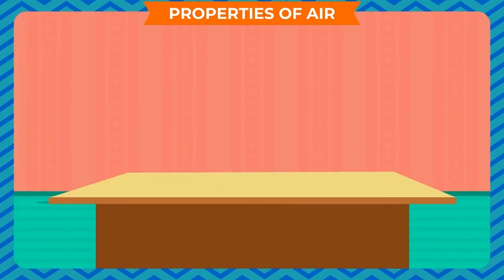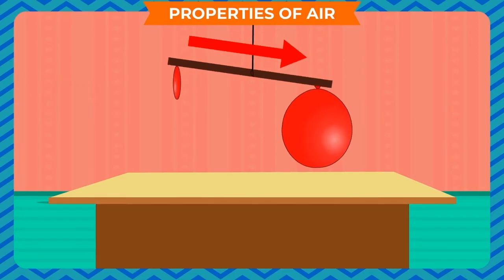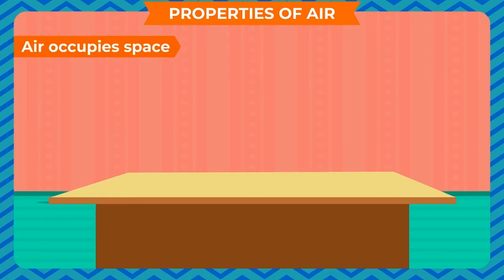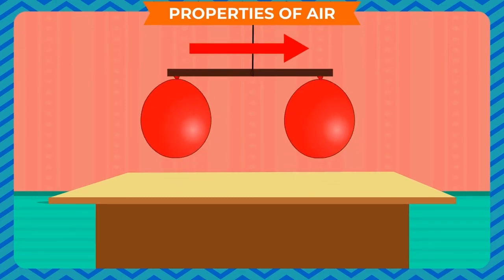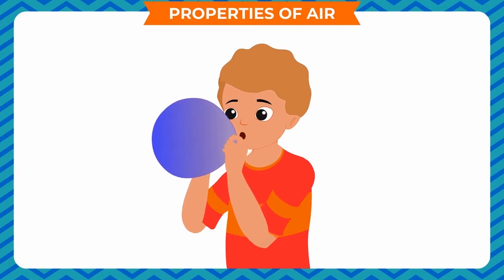Air occupies space: take two balloons and balance them on a stake. Inflate one of the balloons — you observe that the stick tilts to the side of the inflated balloon. From this balloon activity, we observe that a balloon covers very small volume when it is not inflated, but when you blow air into it, it expands and occupies more space. This means air occupies space or volume.